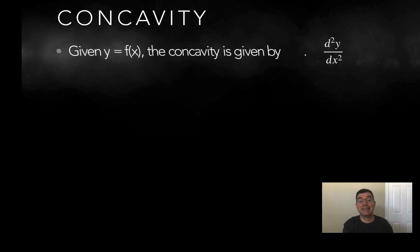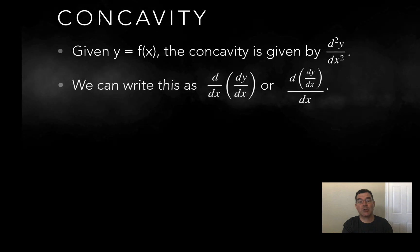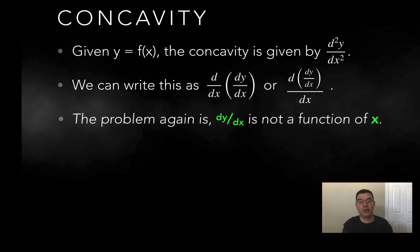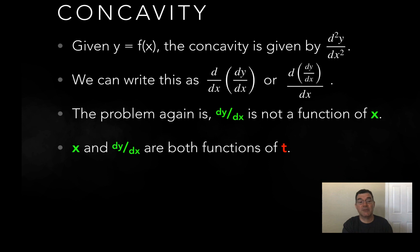Now for concavity, it gets a little more complicated because the concavity is given by the second derivative, which is d squared y over dx squared. And I can write that in a couple more ways as d dx of dy dx, or d dy dx dx. There's a couple of ways to write that. One is going to be easier than the other. It just depends on what you're used to. But the problem again is dy dx is not a function of x, so how am I supposed to write this and get the concavity if all of my equations are expressed in terms of t?